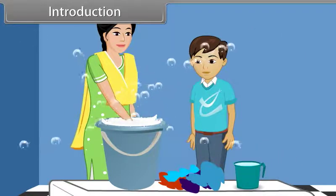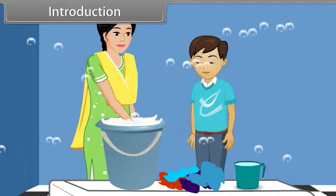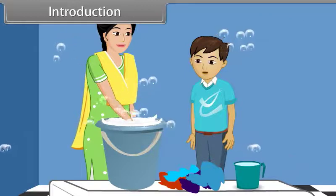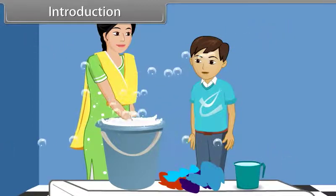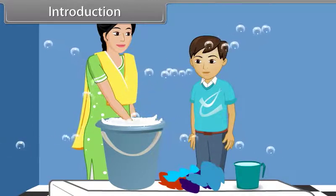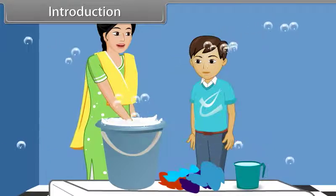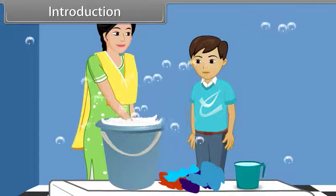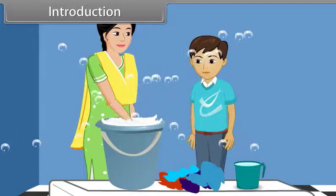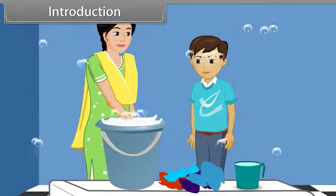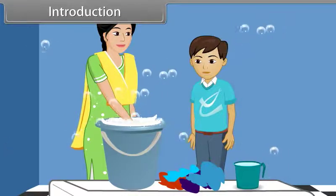Ravi, watching this curiously, asked his mother why soap bubbles are stable while water bubbles are not. His mother replied that it happened due to surface tension. When detergent is added to water, the surface tension is decreased. Hence, a lot of stable bubbles are produced.